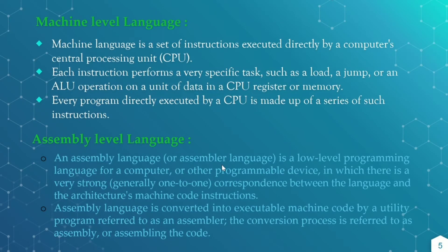Machine level language is a set of instructions executed directly by computer CPU, that is the central processing unit. It is very near to the computer's machine, so it is called the machine level language. And it performs a very specific task such as load, jump, or ALU operations on a unit of data in CPU memory or registers.